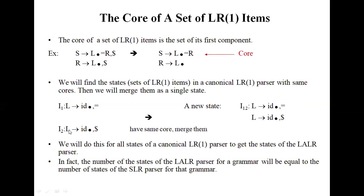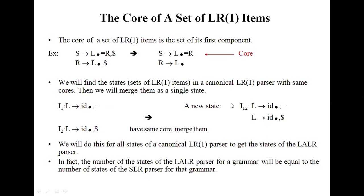This is L produces ID dot. Again L produces ID dot. The core part is the same — only the lookahead symbols equal and dollar are different. So now we can combine these two into a new state I1 and I2, giving us L ID dot comma equal or L ID dot comma dollar. This is the main part of the LALR parsing technique.